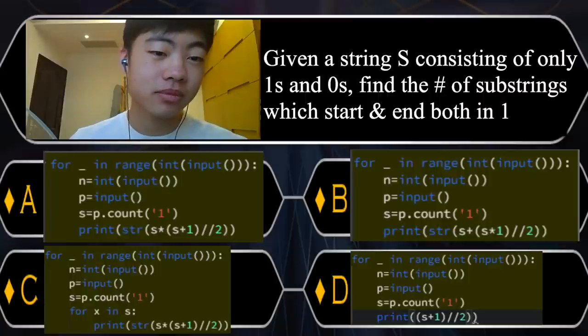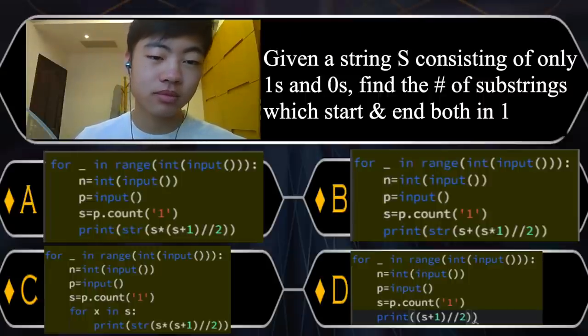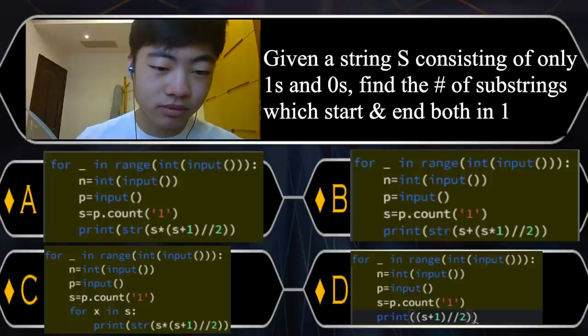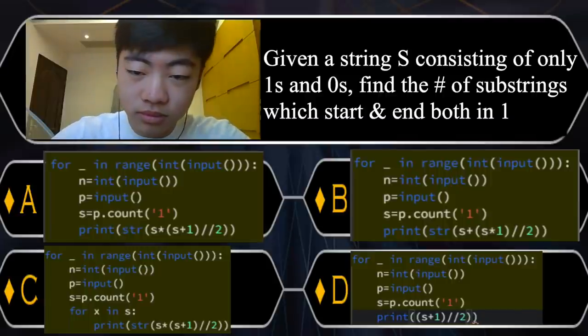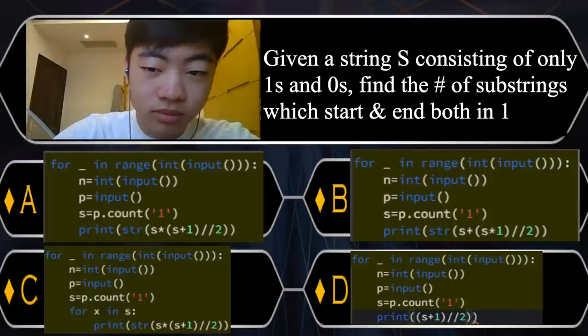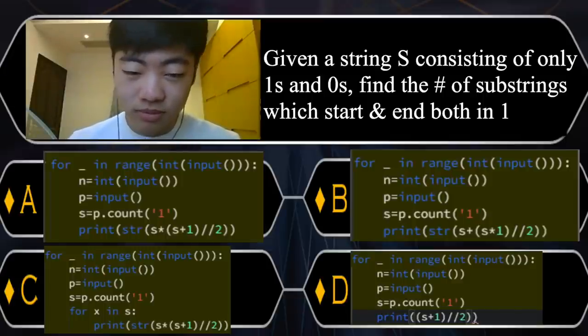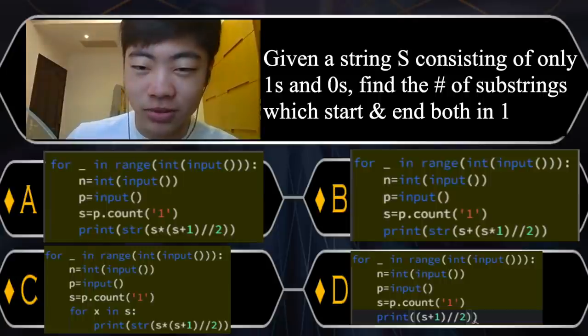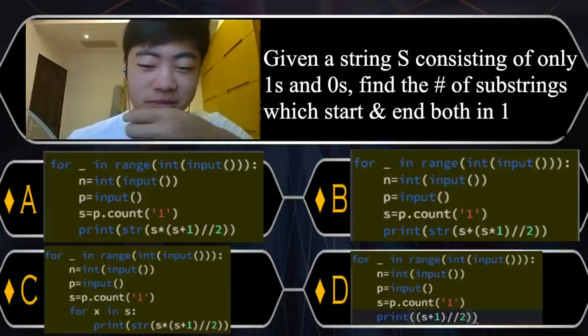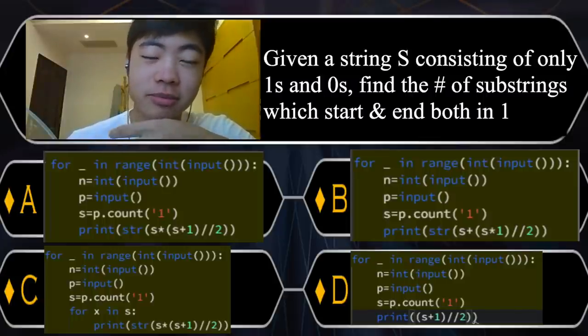The question is, given a string S consisting of only ones and zeros, find a number of substrings which start and end both in one. I'll give you some time to read this question. Okay, so looking at the first example, one, one, one, one. It has four ones and its output is 10. So the formula should be something like the number of ones choose two.